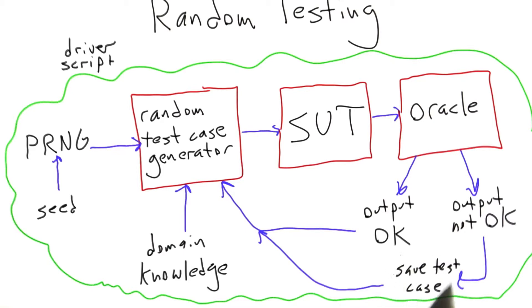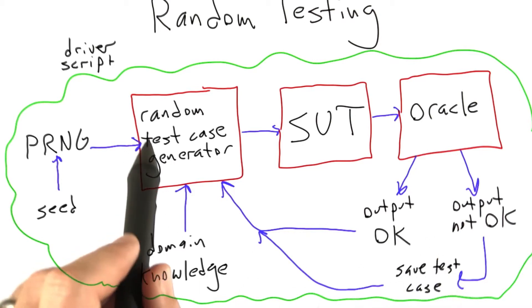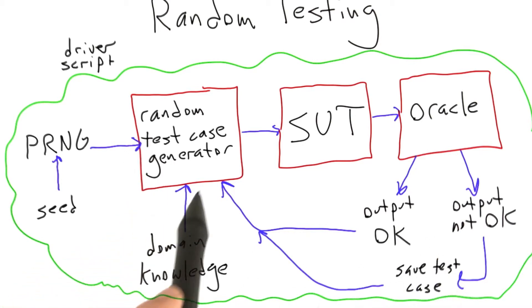That's bad because we, as compiler consumers, don't want the compiler giving us wrong code. So while those assertions can be annoying as compiler users because the compiler crashes, they're actually very good, and we want them to be there.